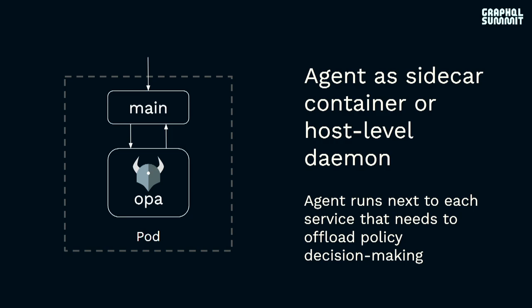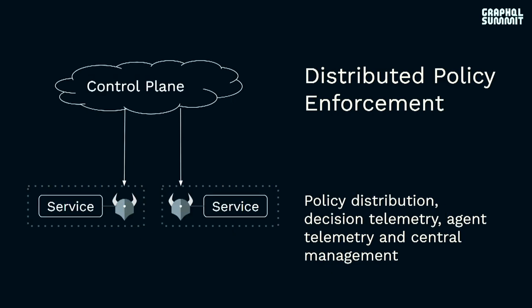Also worth noting, the agent will keep all policies and data needed to make policy decisions in memory. And if you've deployed a service mesh, it is possible to deploy OPA in a way that gives you automatic policy distribution, decision telemetry — logs about decisions that were made — agent telemetry, and centralized management.